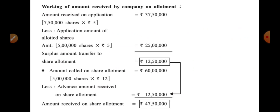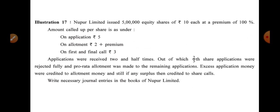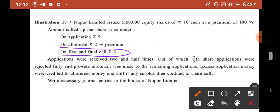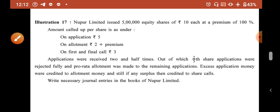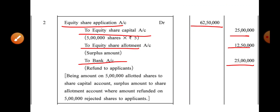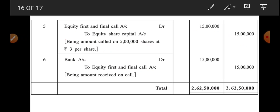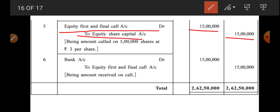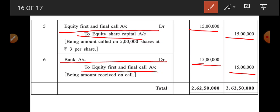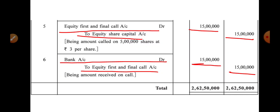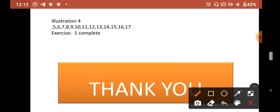Final call is at ₹3 per share. There is no defaulter — all shareholders paid in full. Entry: Equity Share Final Call Account Dr. / To Equity Share Capital Account 5 lakh × ₹3 = ₹15 lakh. Bank Account Dr. 15,00,000 / To Equity Share Final Call Account 15,00,000.